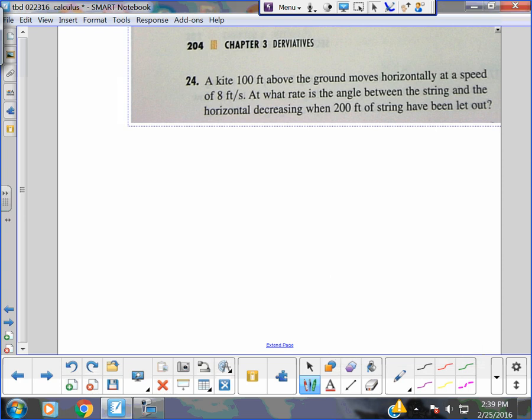So another related rate problem, number 24 here. A kite 100 feet above the ground moves horizontally at a speed of 8 feet per second. At what rate is the angle between the string and the horizon decreasing when 200 feet of string has been let out?